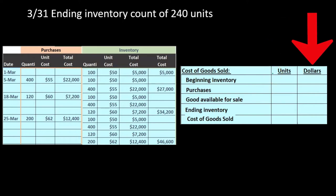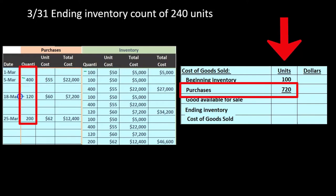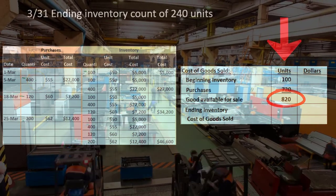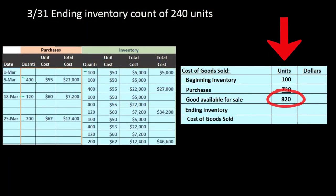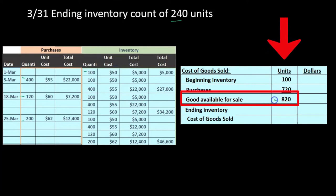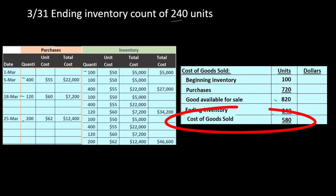In units: beginning inventory was 100, purchases were 400 plus 120 plus 200 equaling 720, so goods available for sale is 820 units. We counted 240 units remaining. Subtracting 820 minus 240 gives us cost of goods sold of 580 units. Note there is an assumption here — we assume these units were sold rather than lost, stolen, or broken.